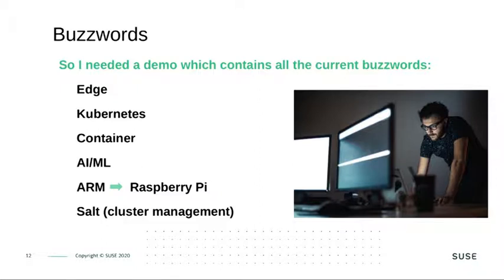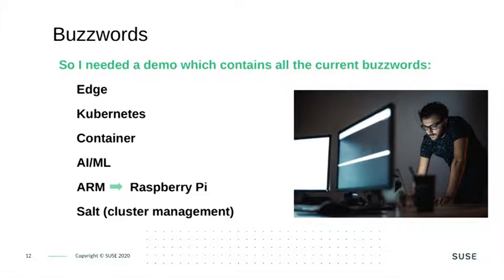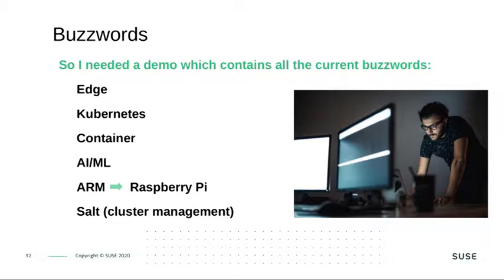Demos always provide a lot of buzzwords, and of course we also want to mention a lot of buzzwords so that everybody finds something they know. So we will have Edge, we will have Kubernetes, we will have Container, we will have AI and Machine Learning, we will have ARM — in this case Raspberry Pi — and for cluster management we will use SOLID.